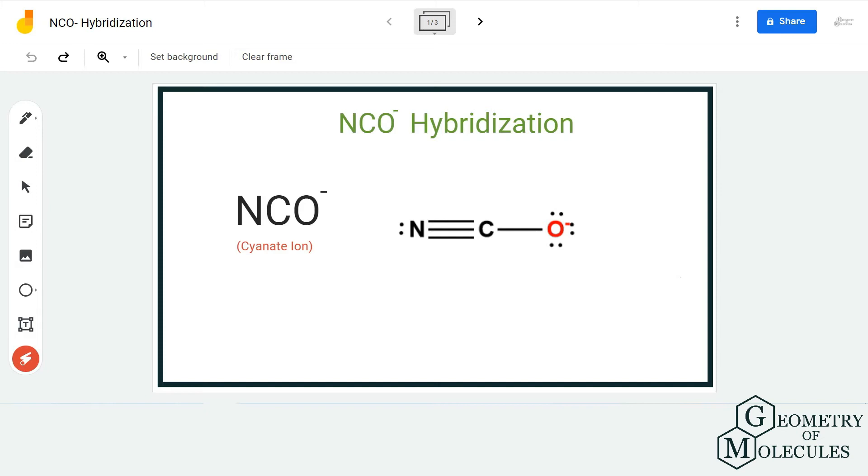Hi guys, welcome back to our channel. In today's video, we are going to help you determine the hybridization of NCO minus ion. It's the chemical formula for cyanate ion, and to determine its hybridization, we are first going to look at its Lewis structure.